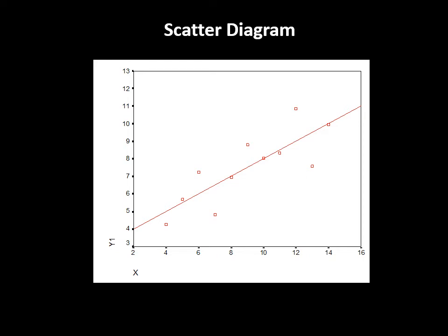Here's a scatterplot. What do we see? There's a relationship between X and Y. The points scatter fairly evenly around the line, which is known as the regression line or line of best fit. The regression equation is: Y-hat equals B0 plus B1 times X1. Y-hat is the estimated Y value, B0 is the intercept, and B1 is the slope.